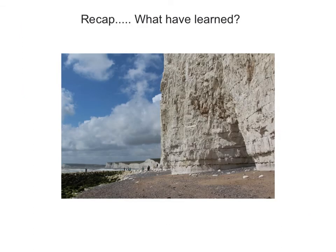Let's have a recap. Looking at this photograph, what processes are operating? We can see very clearly that the cliff is limestone or chalk, so there is definitely corrosion or solution operating here. We can also see natural lines of weakness — the horizontal ones are bedding planes — and this gives an opportunity at high tide for the waves to carry out hydraulic action within these cracks, weakening them.